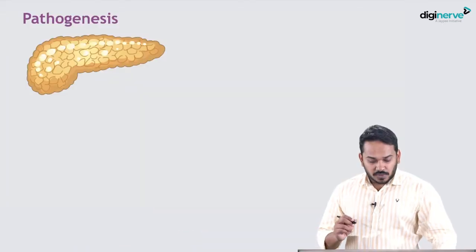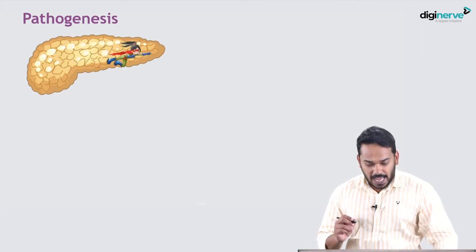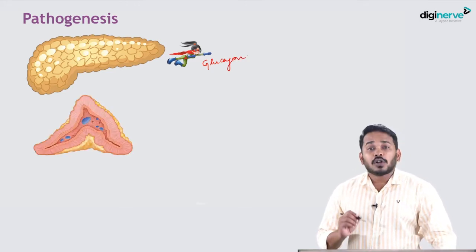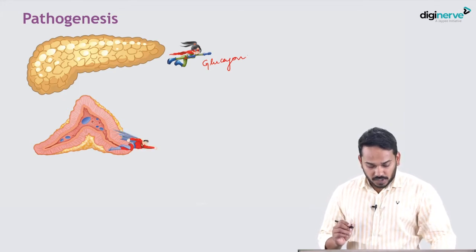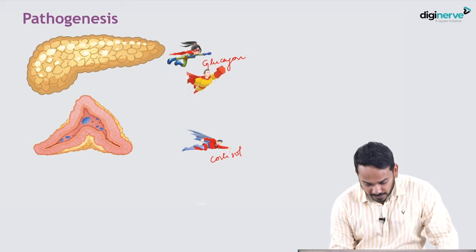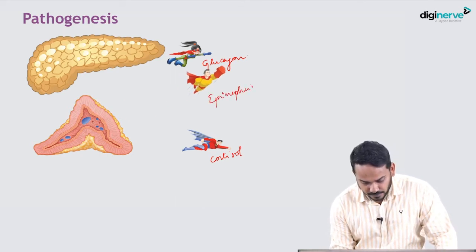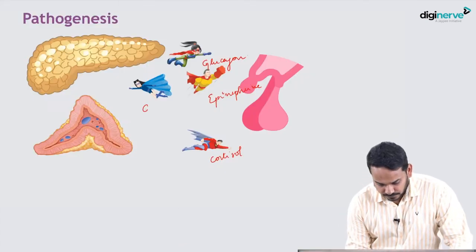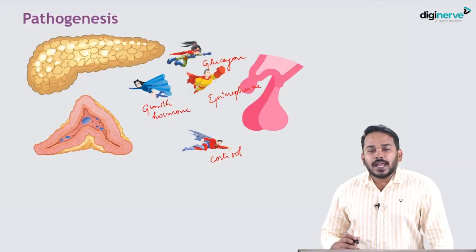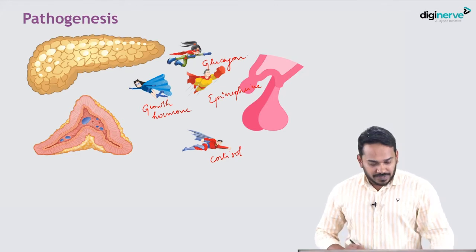This state of starvation stimulates the release of stress hormones. Glucagon is released from the alpha cells of the pancreas. From the adrenal cortex, cortisol is released; from the adrenal medulla, epinephrine is released; and from the anterior pituitary, growth hormone is released.